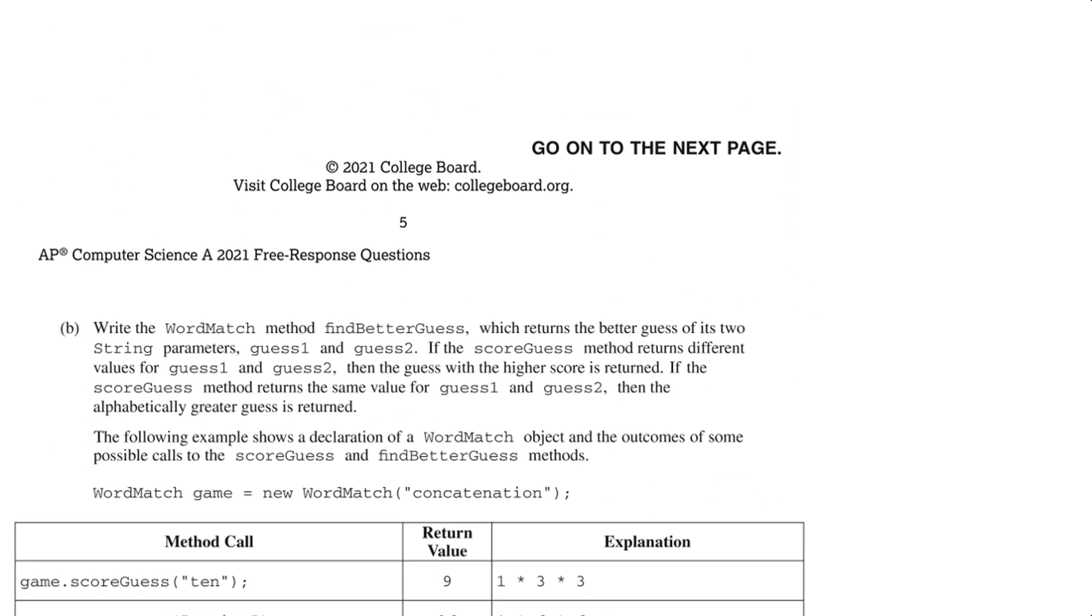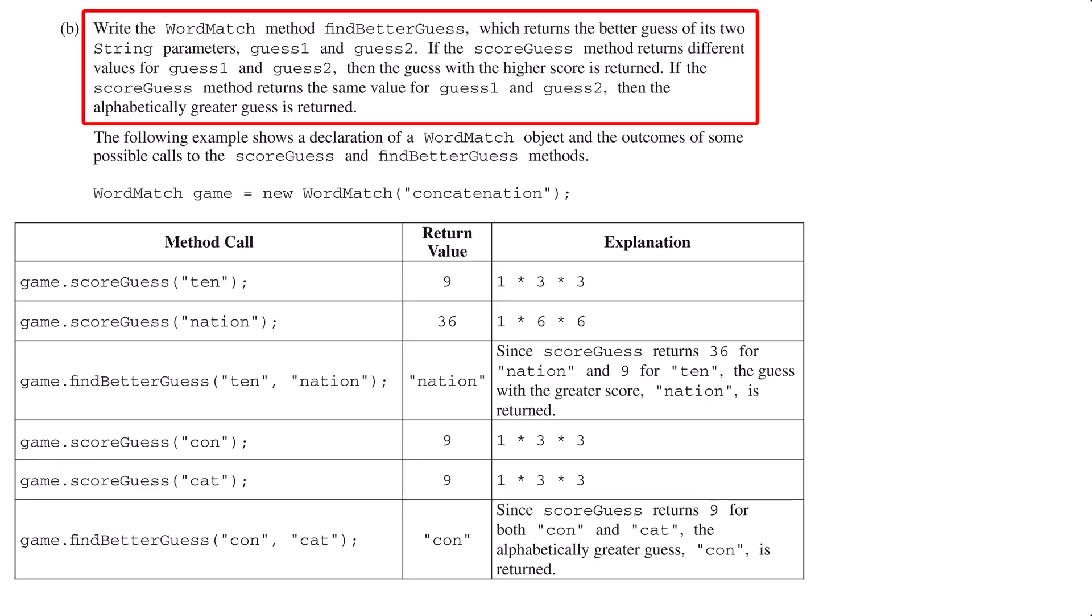Let's look at part b. Part b gives us an expanded explanation of what the score guess method should do. The method takes in two strings and returns the one with the higher score as calculated by the score guess method. If the two guesses have the same score, the one that is alphabetically greater is considered the better guess. The term alphabetically greater is confusing, but effectively, in the case of a tie score, we want the guess that comes second if they were arranged alphabetically. The last line of the table gives you an example of what they are looking for.